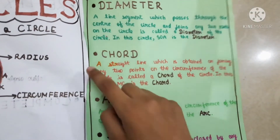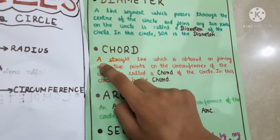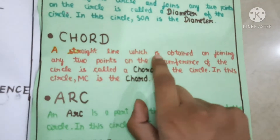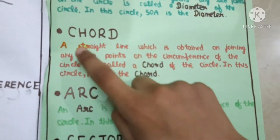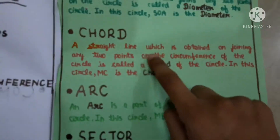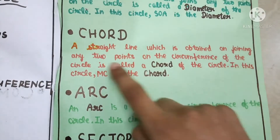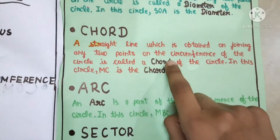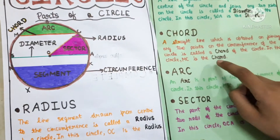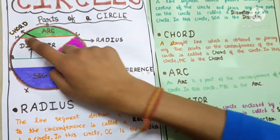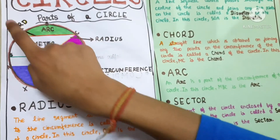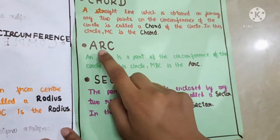Chord: a straight line which is obtained by joining two points on the circumference of the circle is called a chord of the circle. In this circle, MC is the chord.